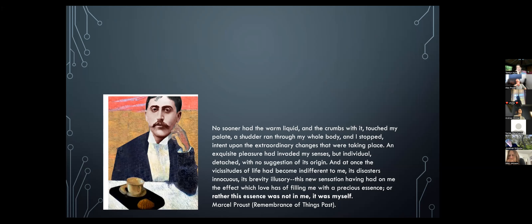An audience member asks: given what was mentioned about key mechanisms for anesthetics, and given prior discussions at Tucson meetings about anesthetics and the neural correlates of consciousness as Koch has defined them — the parts of the brain necessary and sufficient for consciousness — would identifying the mechanisms of anesthesia basically be the same as identifying the NCC?